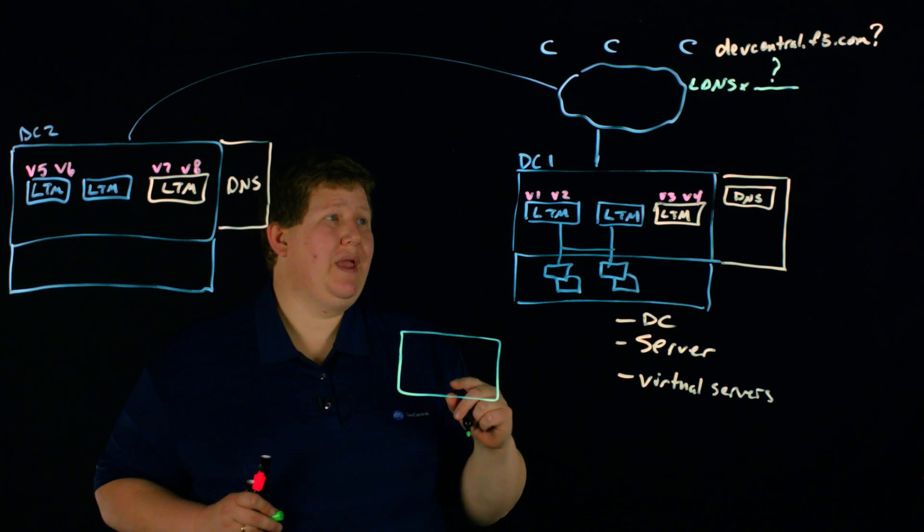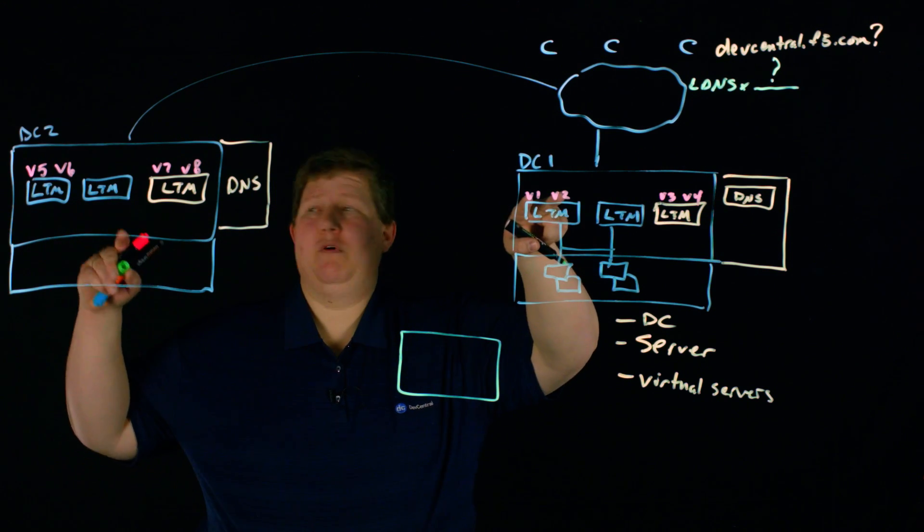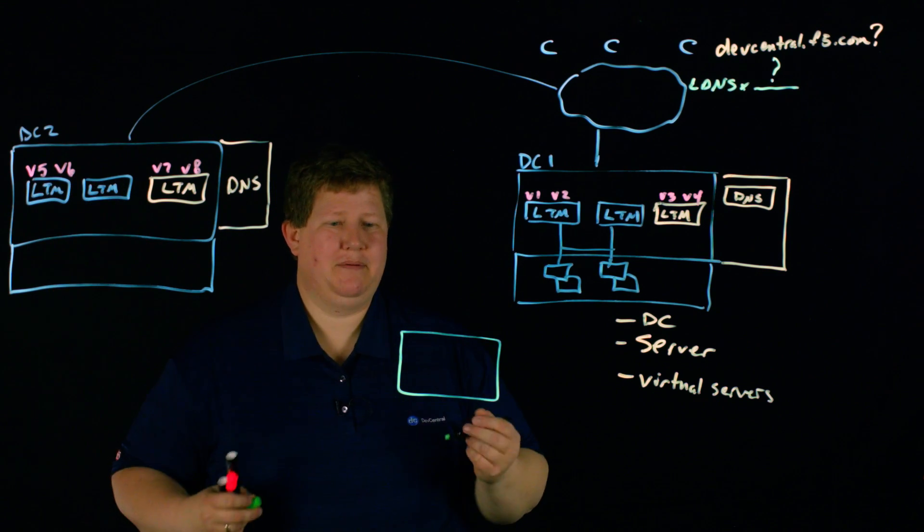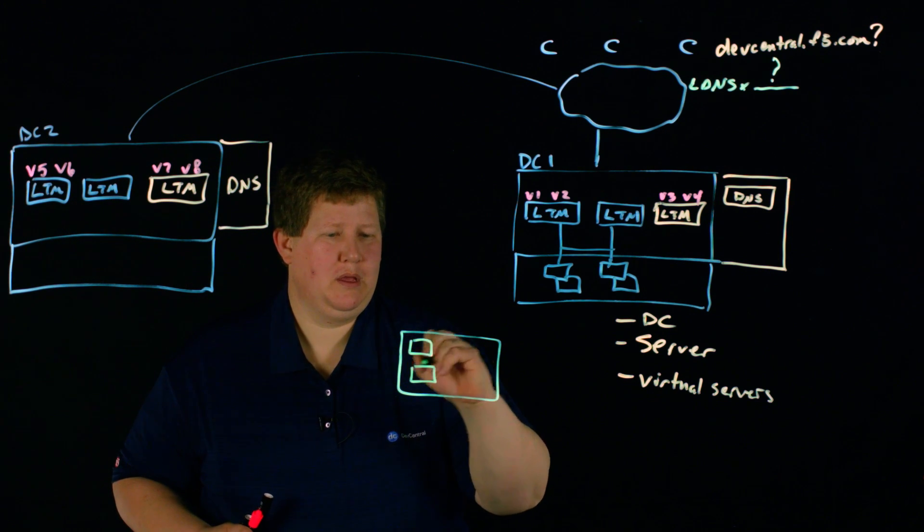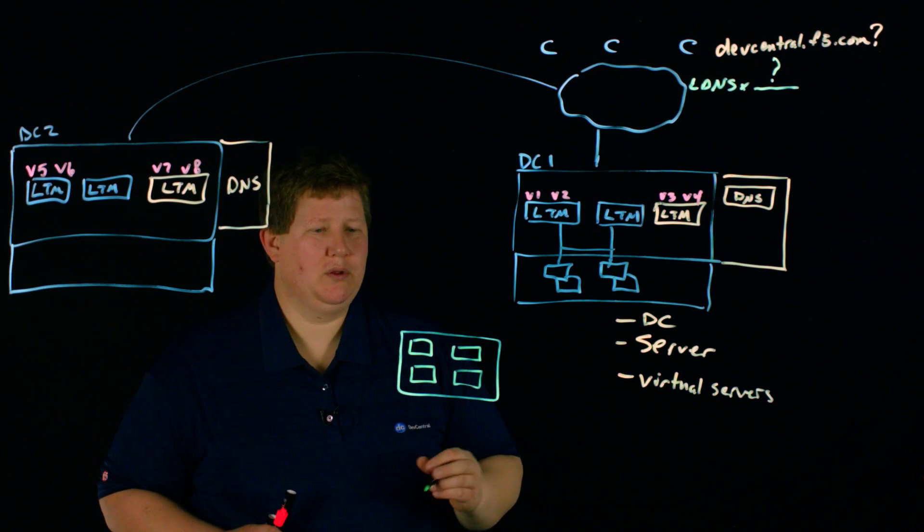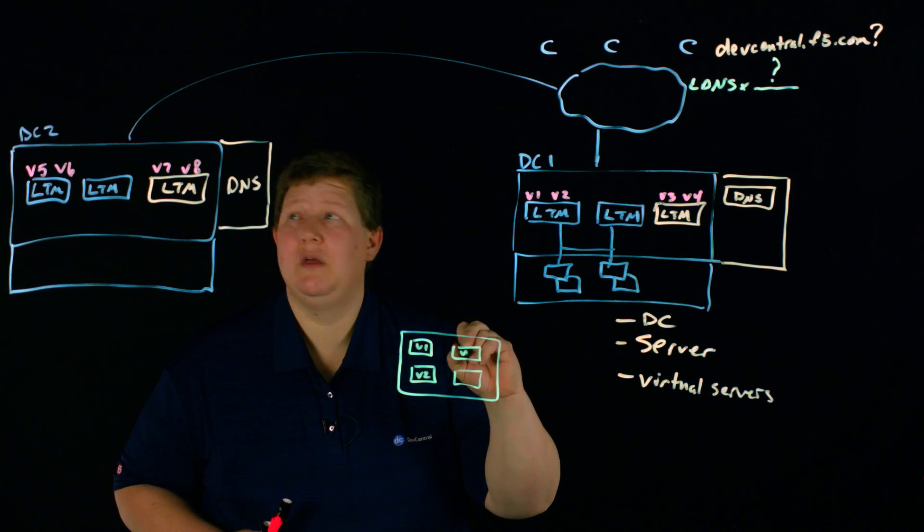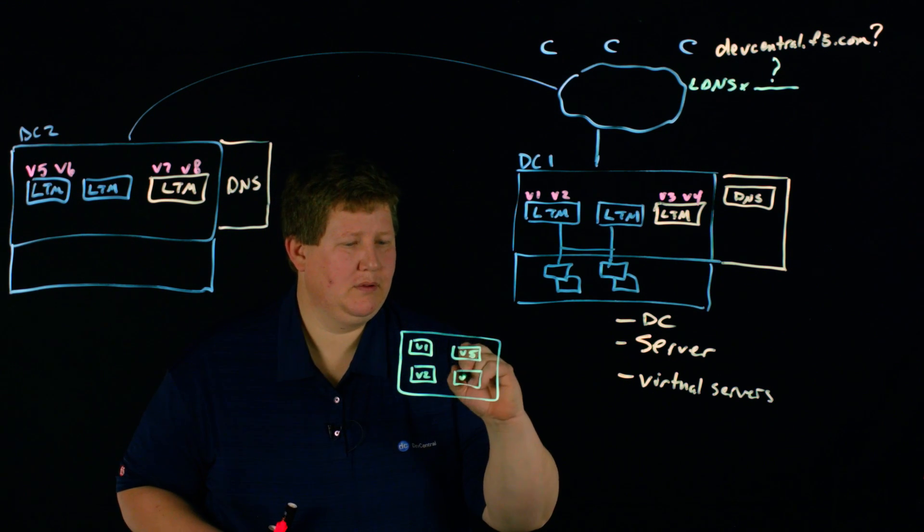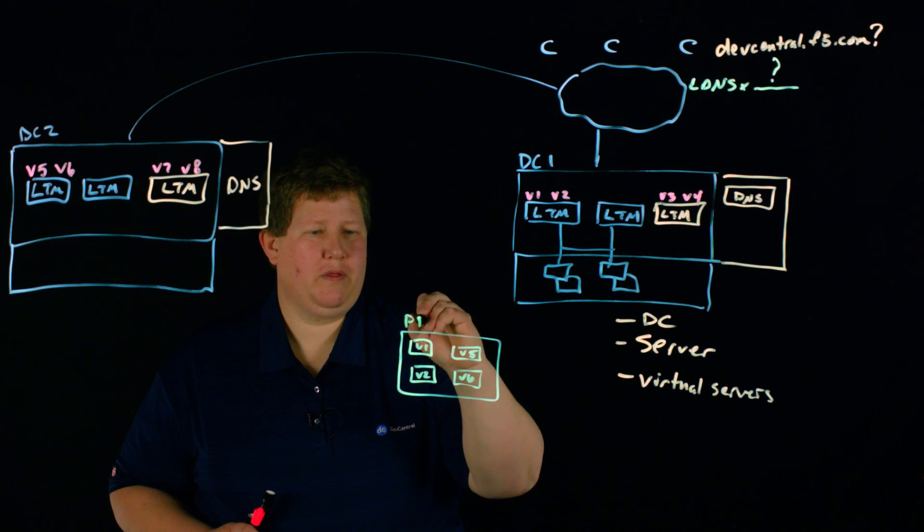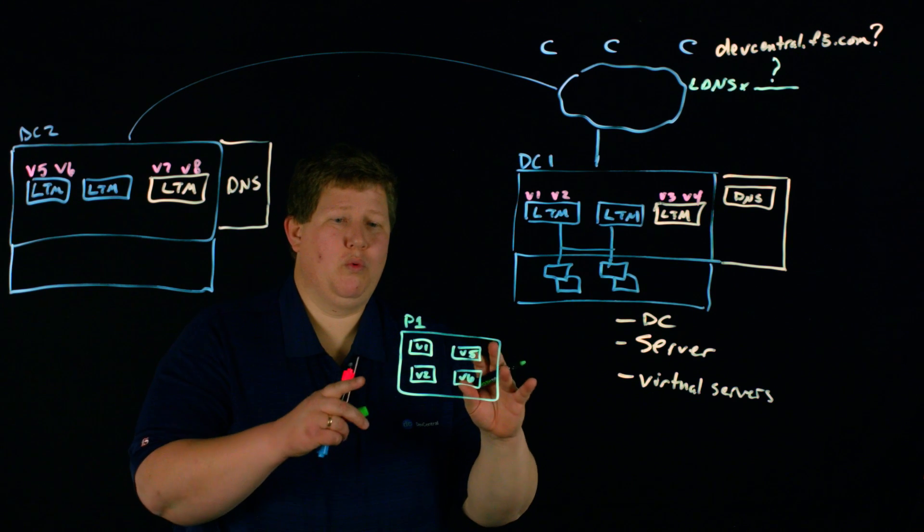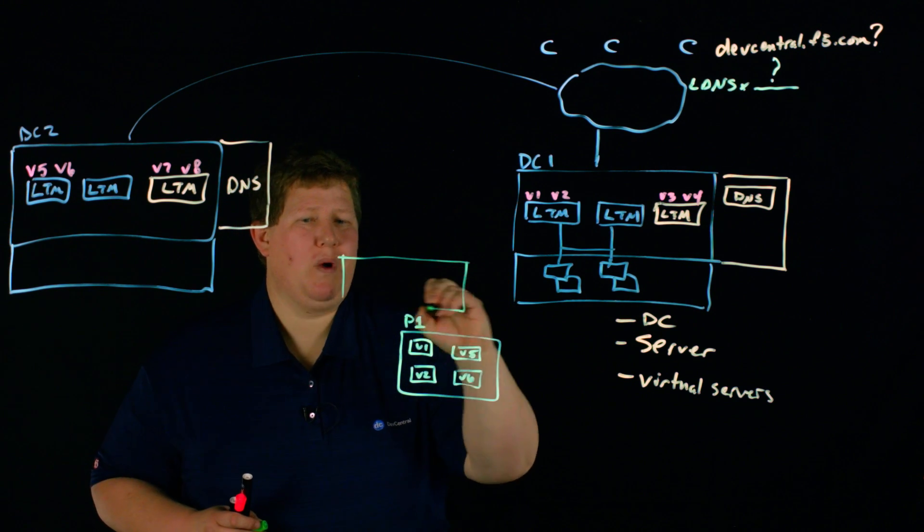And then that becomes the construct for a pool. So just like at the LTM level where you have individual services as pool members, here you have a virtual server as the service in a pool. And so if we have, say we have one particular app, and all four of these virtual servers are in that particular app, we can say that we'll put these virtual servers in that pool. And then V1, V2, V5, and V6. And so this would be pool one.